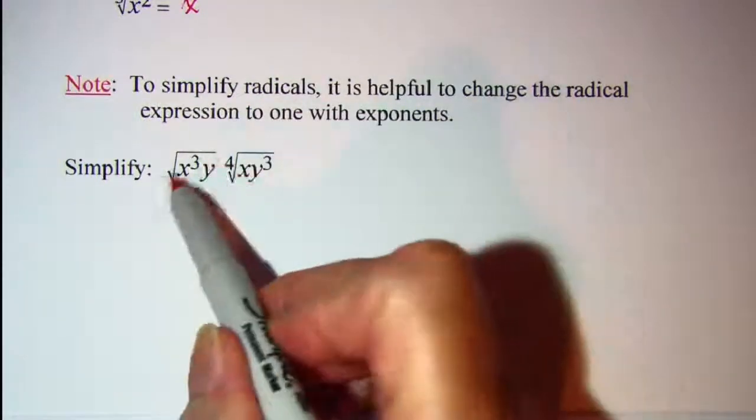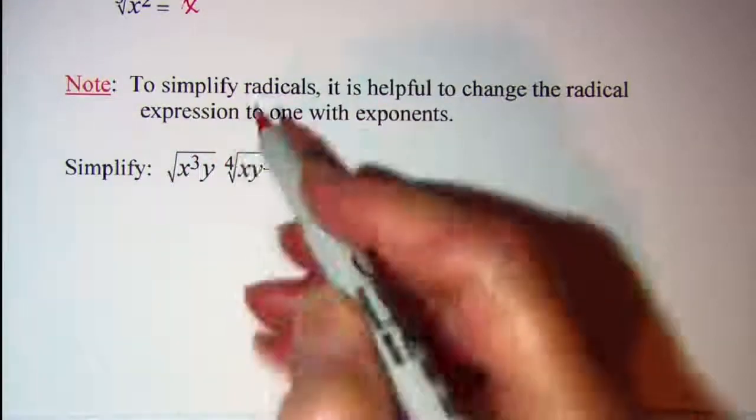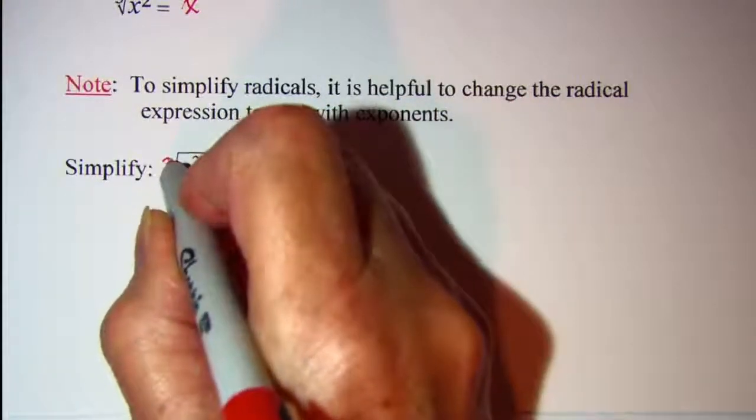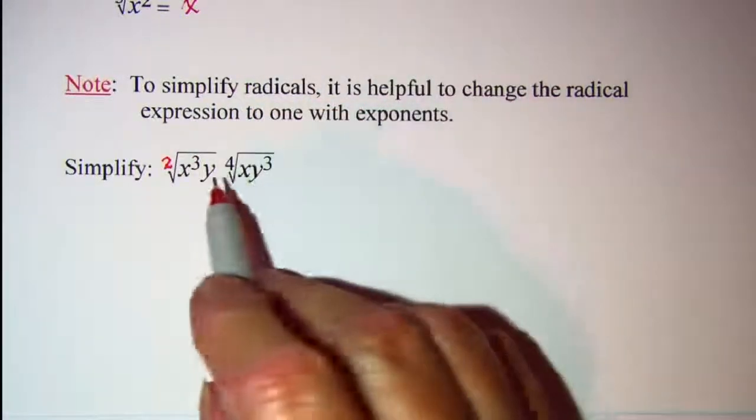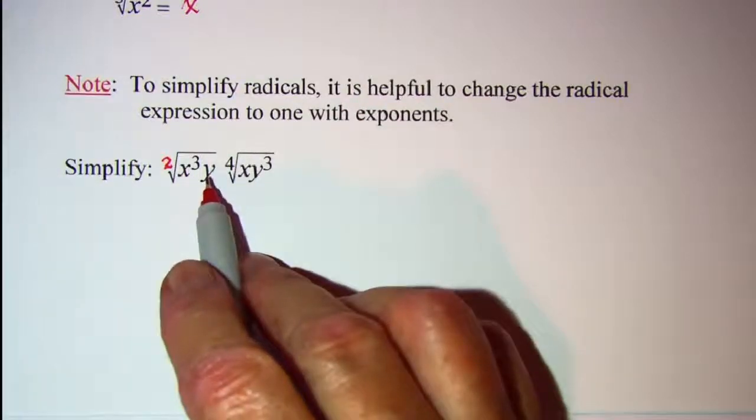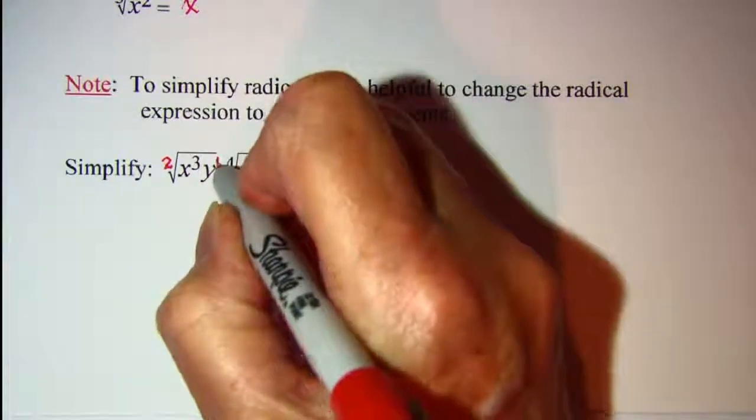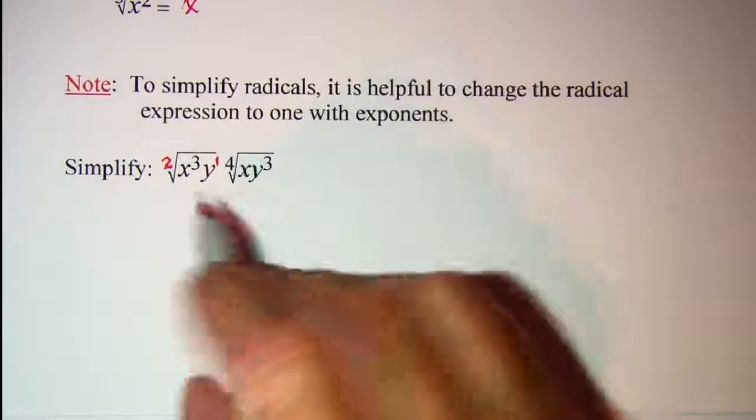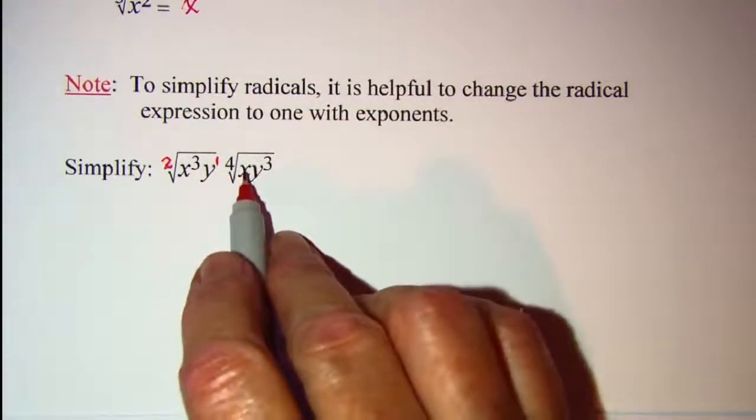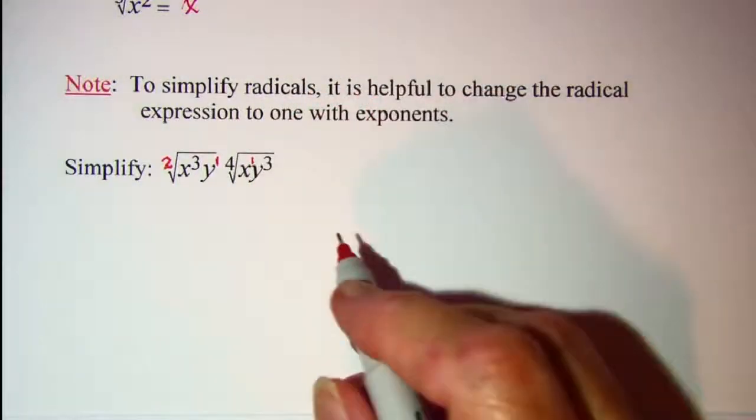I don't have an index showing on this radical which means that it's a square root so I could write this index 2, and then this factor in the radicand doesn't have an exponent which means that its exponent is a 1. And here's another factor that doesn't have an exponent on it so I could put that 1 there as well.